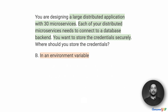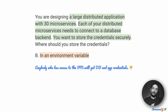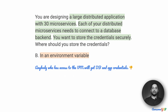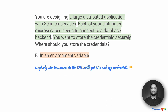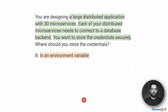Option B suggests that we store credentials in an environment variable. Anybody who has access to the VM will get information about the credentials if you put them in an environment variable. Only the app and maybe some specific people should know about these credentials, but if you use an environment variable, the audit team, the networking team, or even a manager looking at how the machine is configured could see them. This breaks the principle of least privilege, so option B is also not viable.